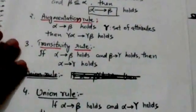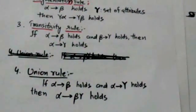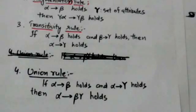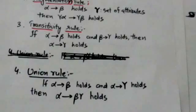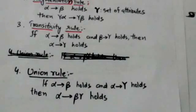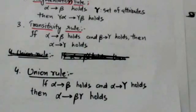The fourth inference rule is the union rule. It states that if a functional dependency from alpha to beta holds and a functional dependency from alpha to gamma holds, then the functional dependency from alpha to beta-gamma also holds, where beta-gamma denotes beta union gamma.